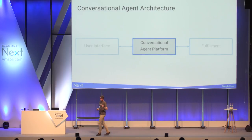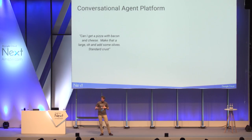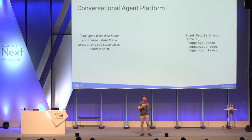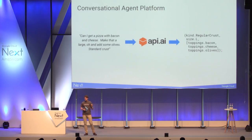The second building block is the conversational agent platform. Its job is simple but complicated — it has to understand humans. Something like 'can I get a pizza with bacon and cheese, make that a large one, and add some olives, standard crust' — this very unstructured way people communicate. As developers, we want a nice structured JSON format to act upon, but that's unfortunately not how most people talk. That's where the conversational agent platform comes in, and this is exactly what API.AI does.